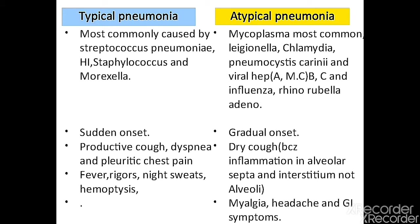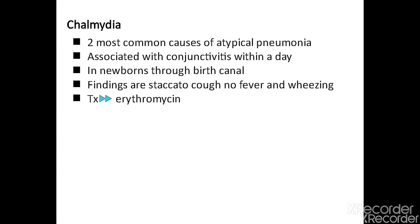Chlamydia is the second most common cause of atypical pneumonia. It is associated with conjunctivitis — the baby is born and presents within a day with conjunctivitis. The infant is afebrile with no fever or wheezing, and presents with a staccato cough. This infection is acquired through the birth canal. Treatment is erythromycin.